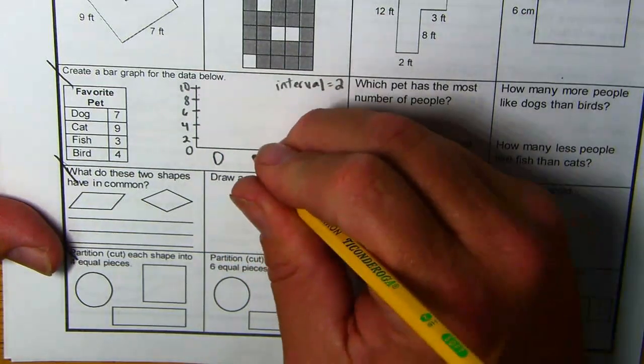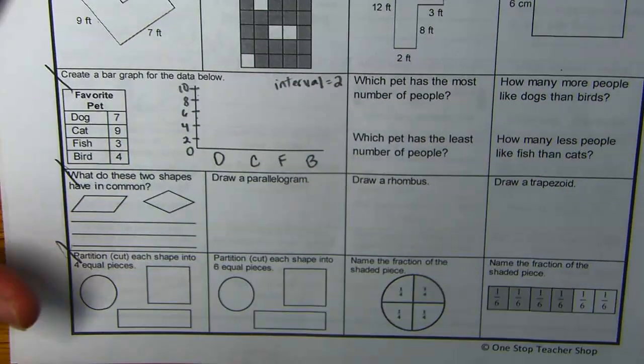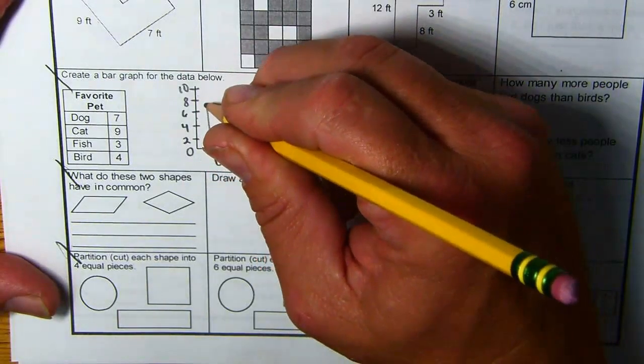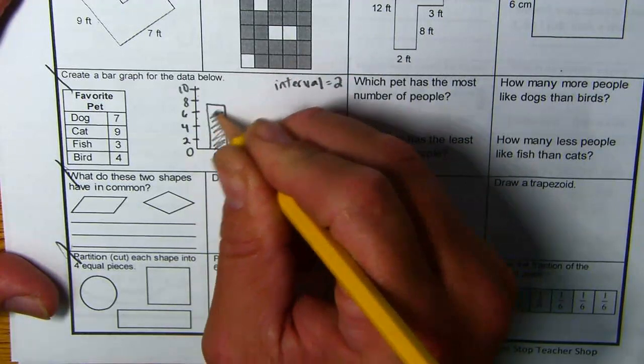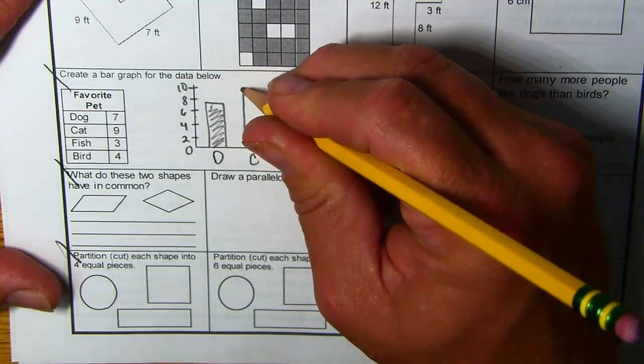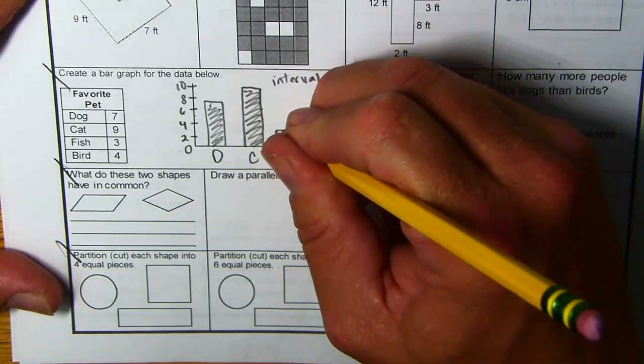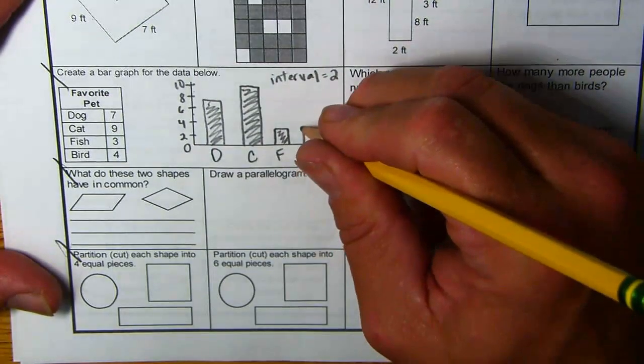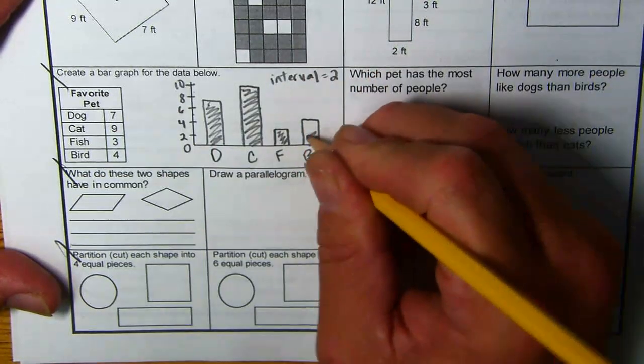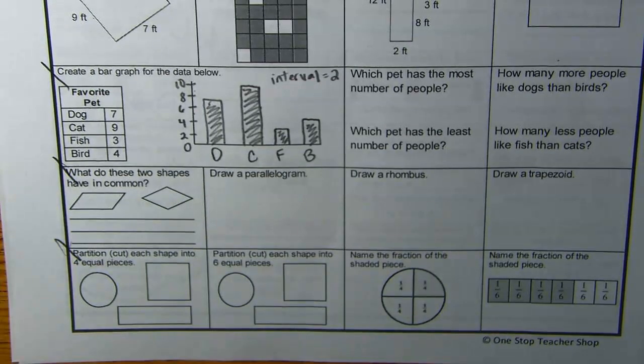We got dogs, cats, fish, birds. Dog is seven. That goes right in the middle of six and eight. Don't color the whole thing in thick. Just kind of good enough. Cat is all the way up in between eight and ten. Fish, three in between two and four. Birds is four. You're going to go all the way to four. All right. So, there is a bar graph.